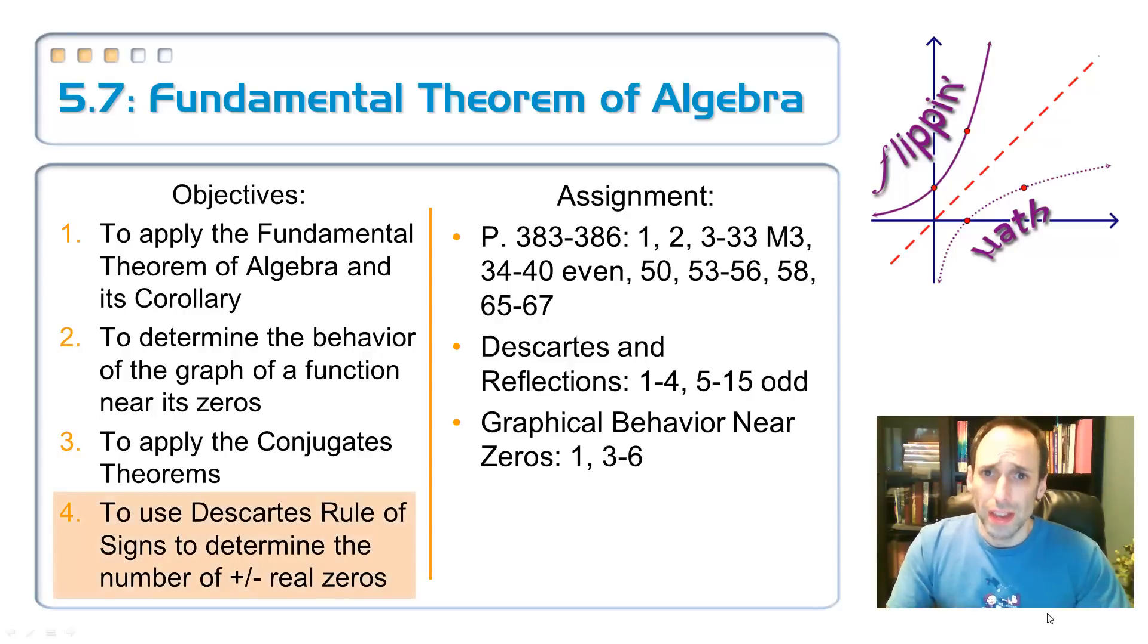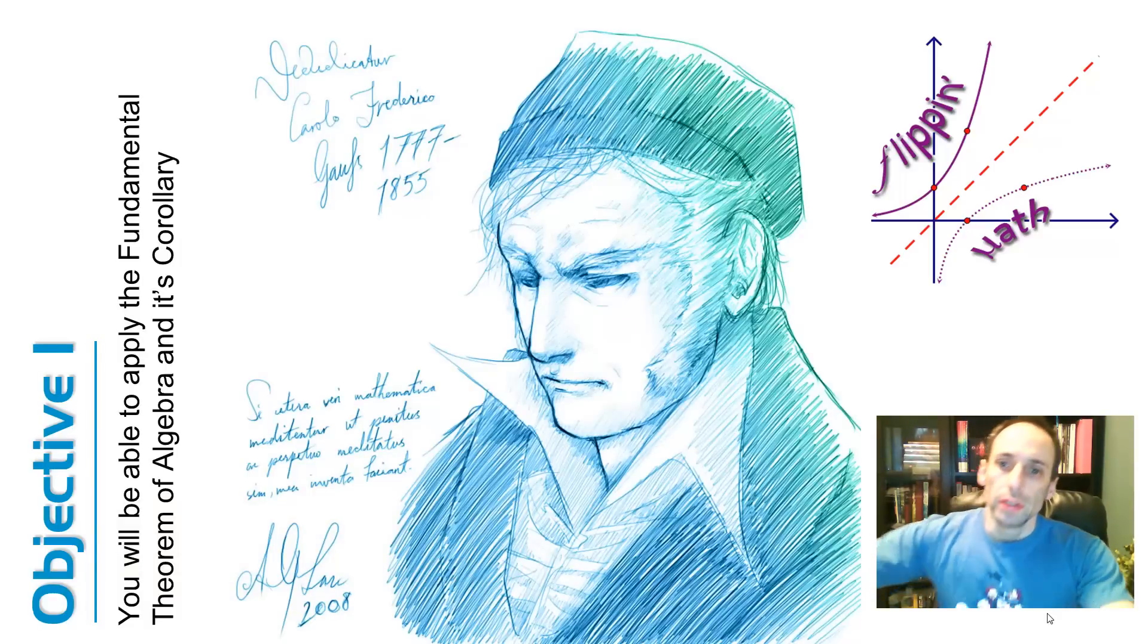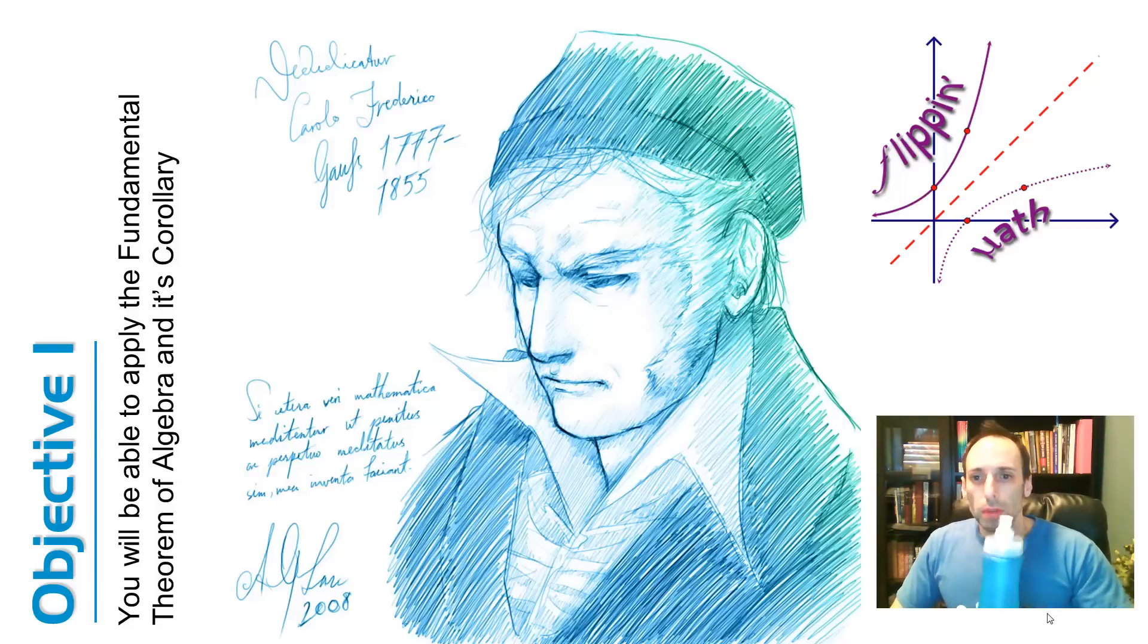Number three, we have been solving these polynomial functions and we're getting sometimes some conjugates. So we've got a couple of conjugate theorems to talk about. And then the last one, Descartes. Descartes was a French philosopher and mathematician and he came up with some rules. So we're going to use Descartes's rule of signs to determine positive or negative real solutions. It's pretty handy. It'll be another one of those shortcuts.